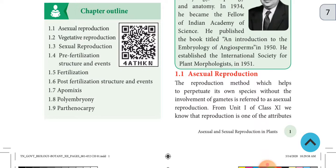The reproduction method which helps to perpetuate its own species without the involvement of gamete forming is referred to as asexual reproduction.